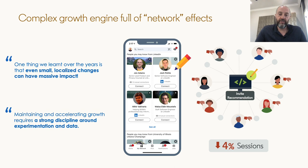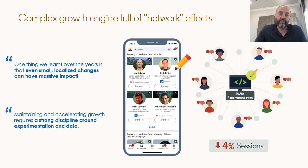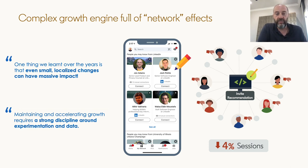This complex growth engine is full of network effects. Just like the butterfly effect, we have the network effect on social platforms. One thing we learned over the years is that even small localized changes can have massive impact. For example, an AI engineer working on the PYMK algorithm — people you may know — could make small changes that cause unforeseen negative impact on sessions. With so many different teams making changes, both customer-facing and infrastructure-facing, these network effects can lead to different consequences.